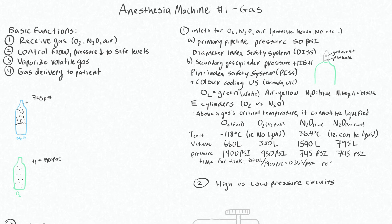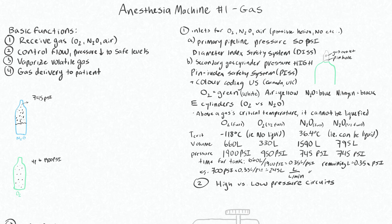If you want to know how many liters are remaining in your tank, just multiply 0.35 by whatever PSI the tank is reading. For example, if you have 700 PSI on your O2 tank: 700 times 0.35 liters per PSI gives you 245 liters. Then simply divide the liters remaining by your liters per minute flow rate. At 15 liters per minute — what you'd use with a bag-mask — that gives you 16 minutes with this O2 tank.